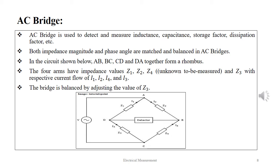In the circuit shown below, AB, BC, CD, and DA together form a rhombus. The four arms have impedance values of Z1, Z2, Z4, and Z3 with respective current flow of I1, I2, I4, and I3. The bridge is balanced by adjusting the value of Z3.